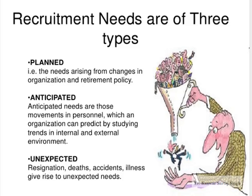Recruitment needs are of three types. First is planned — needs arising from changes in organization and retirement policy. Second is anticipated — movements in personnel which an organization can predict by studying trends in internal and external environments. Third is unexpected — resignations, deaths, accidents, or illness — things which are not expected. These are the three types of recruitment needs.